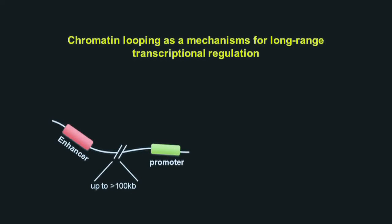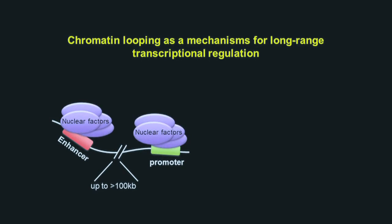For example, enhancer elements can reside up to hundreds of kilobases away from the gene promoters they control. In one widely used mechanism, referred to as the contact model or looping model, a distal enhancer physically contacts the target promoter through interactions between nuclear factors. The intervening DNA sequence is looped out.